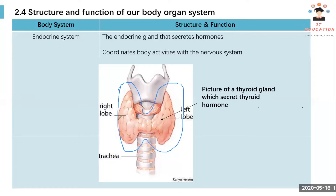The thyroid gland will secrete hormones like thyroid hormone. Our brain will tell the gland to secrete more thyroid hormone, and the gland will then secrete thyroid hormone.